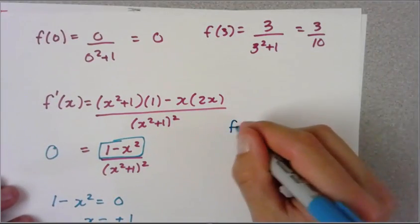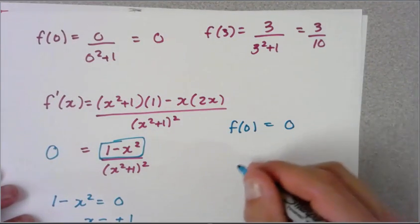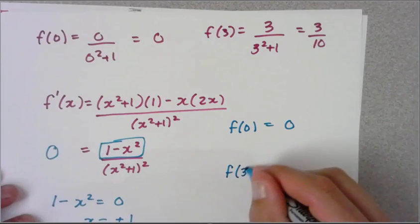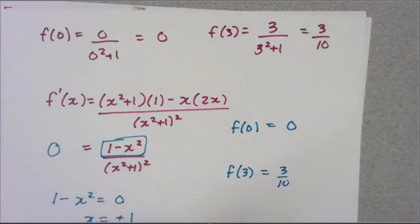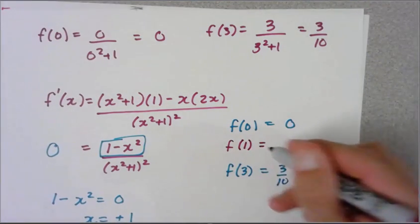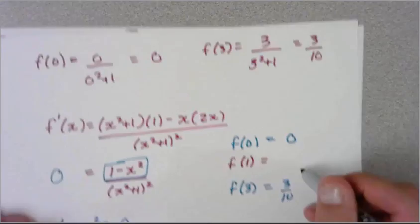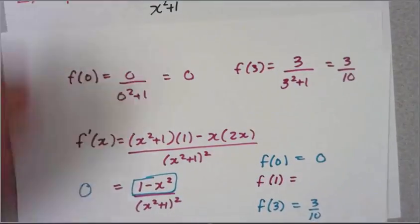I had f(0) being zero, f(3) being 3/10. Now I'm going to go in the middle here and let's check our critical value at f(1). So we go back up to the original, and we have 1/(1² + 1), so that's just going to be 1/2.